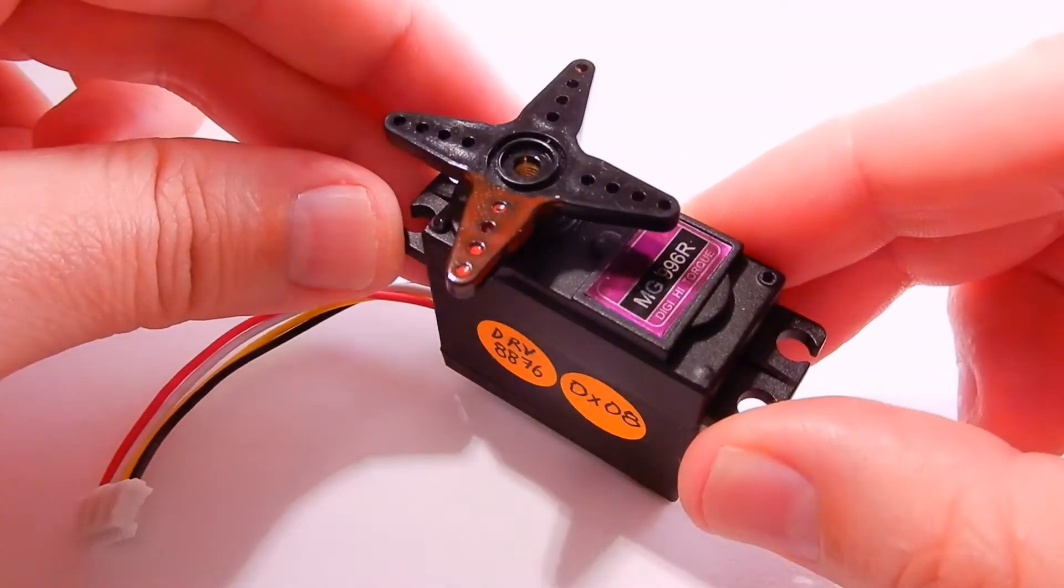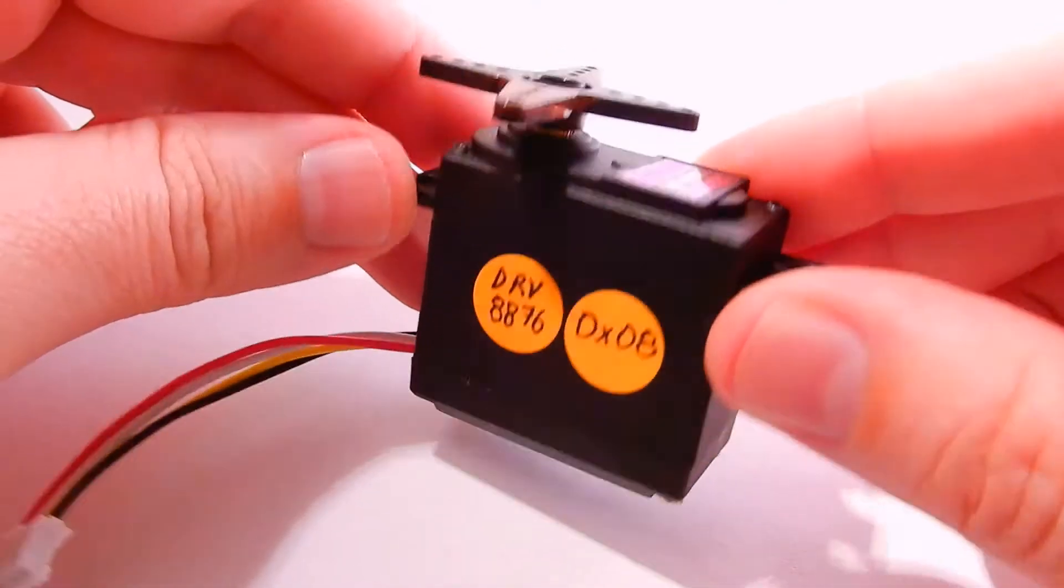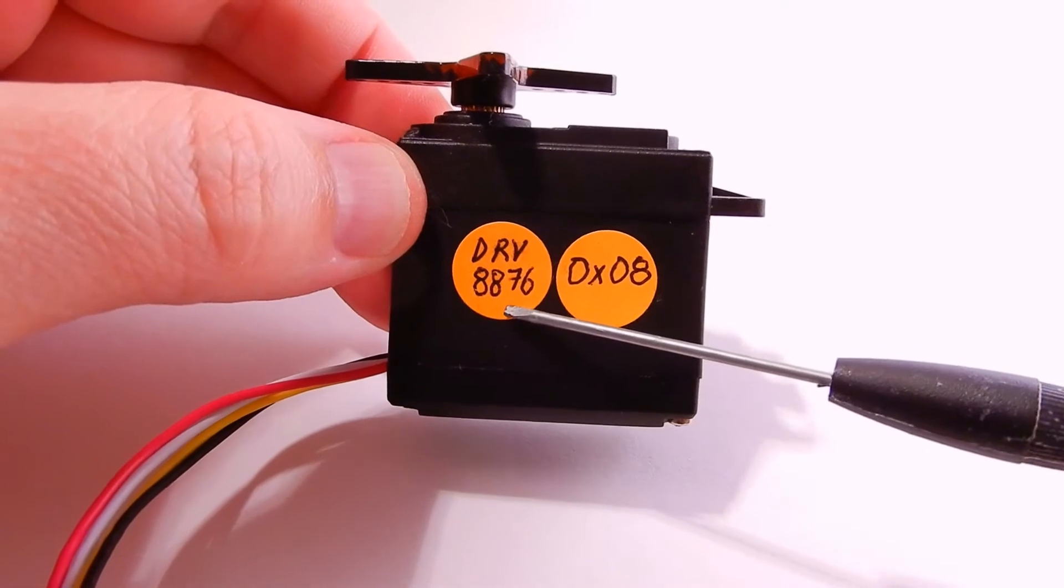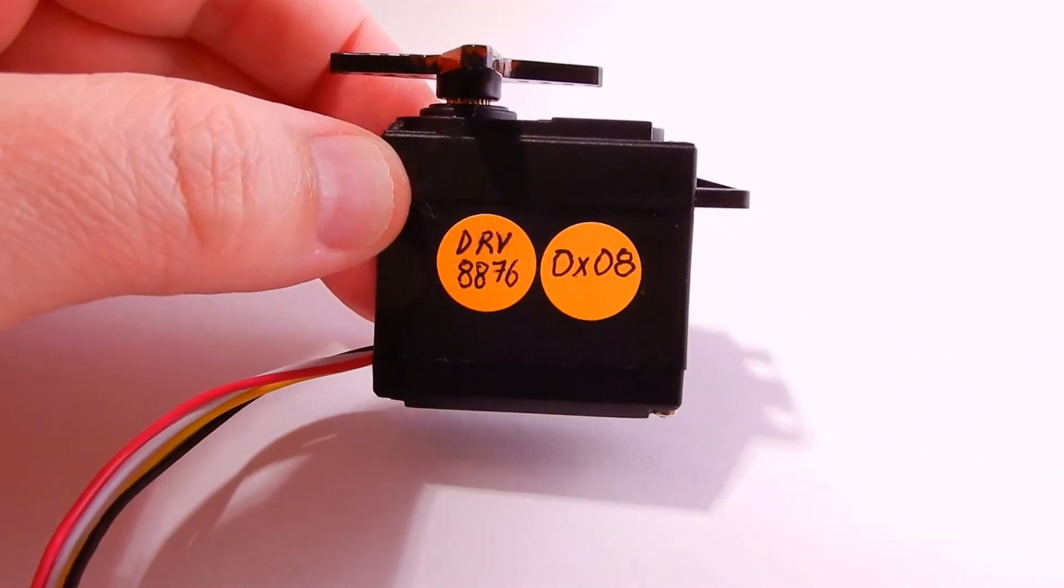Hello guys, this is another update to showcase the next servo board. This will be a 3.5 amp board that can power servos of around 12 kilograms per centimeter.